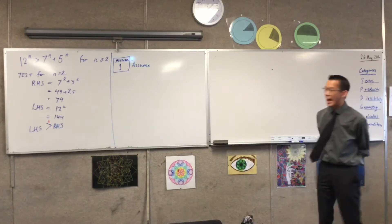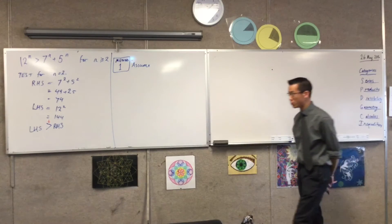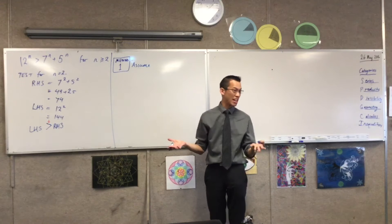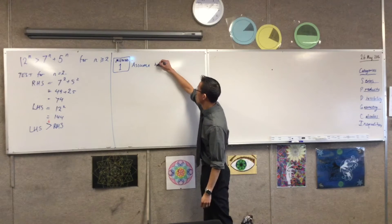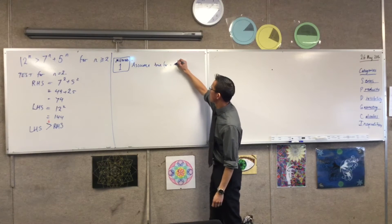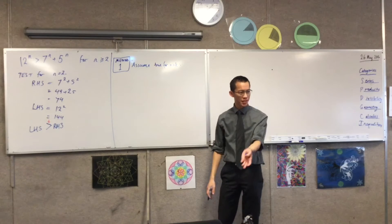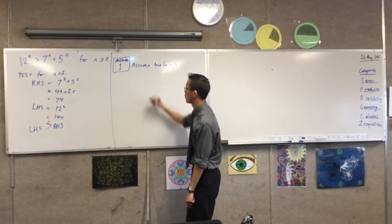So what I'm going to do here is, as I usually do, I'm going to assume that the statement is true for n equals k. So assume true for n equals k. I'm just going to rewrite the line with k's instead of n's. We've seen this before, no big deal.